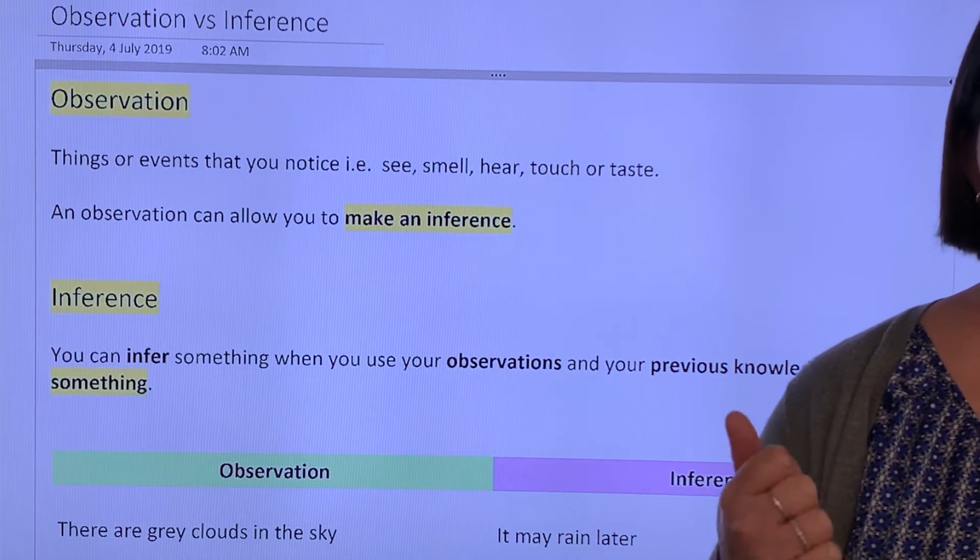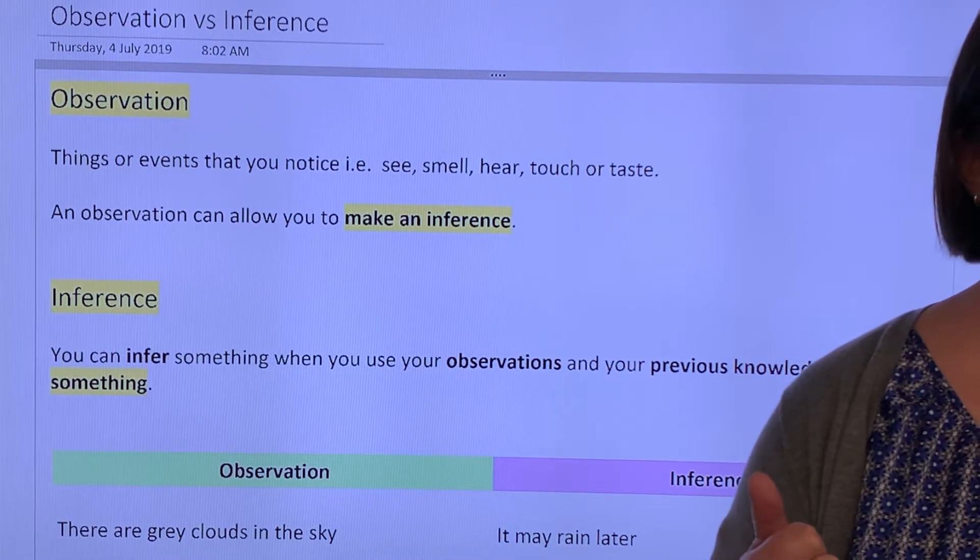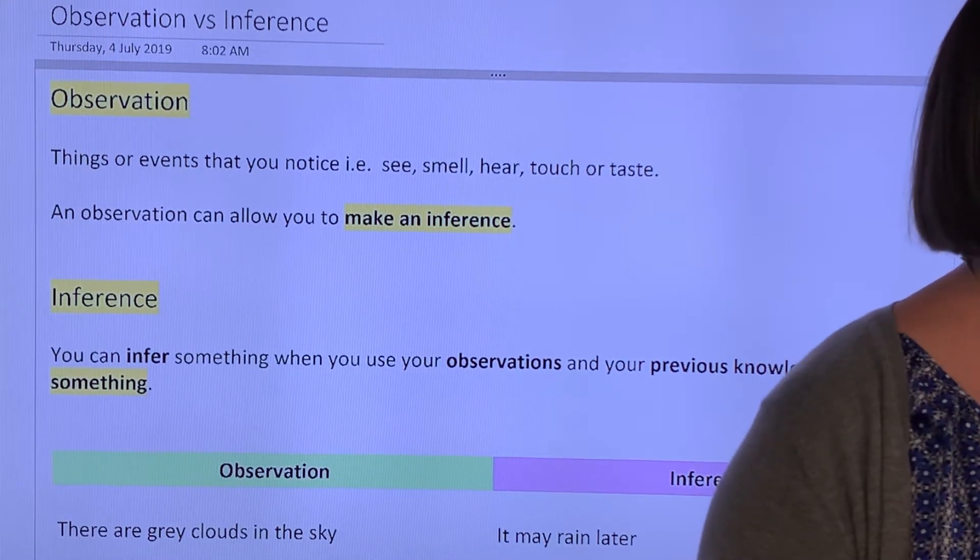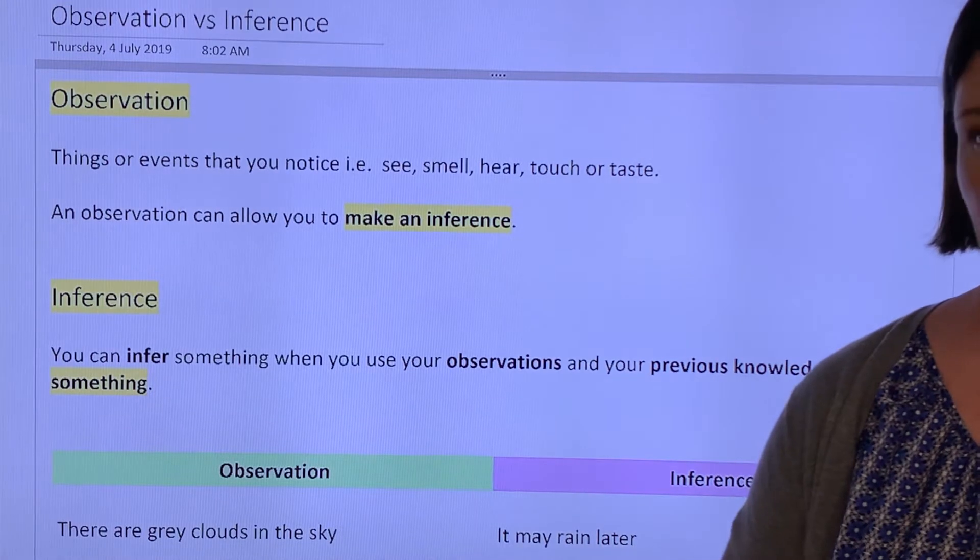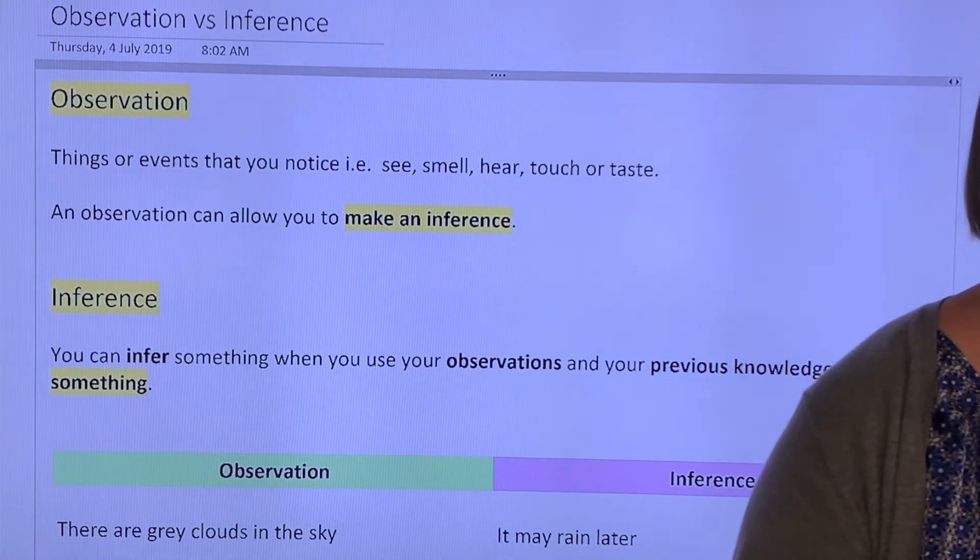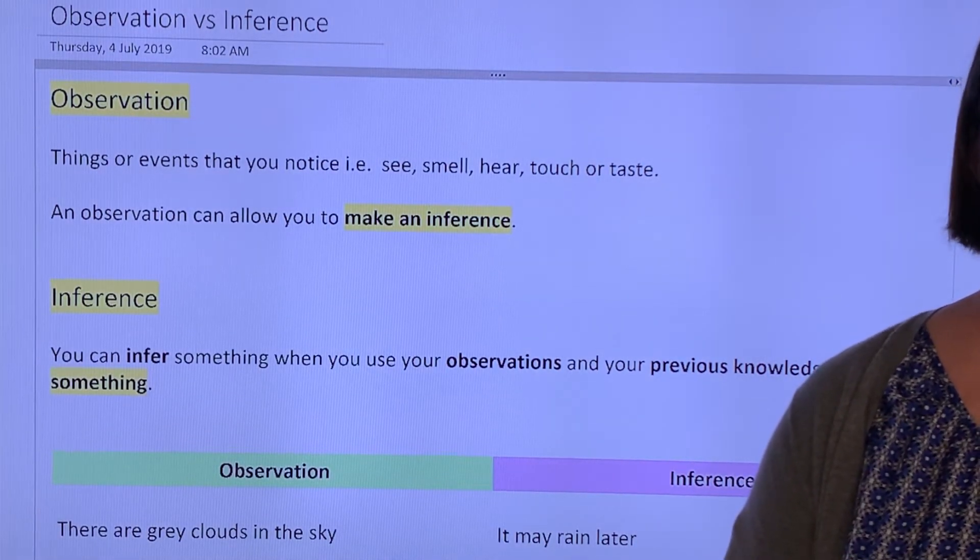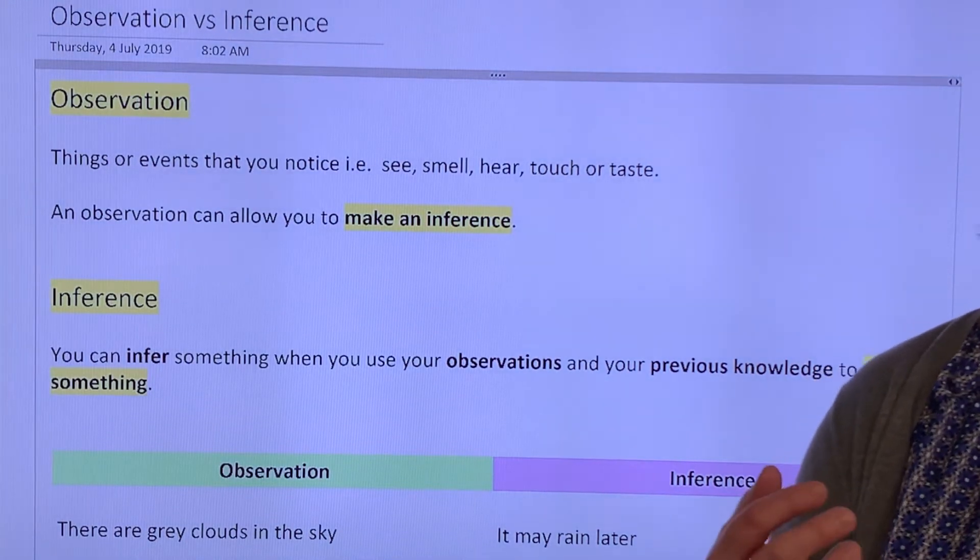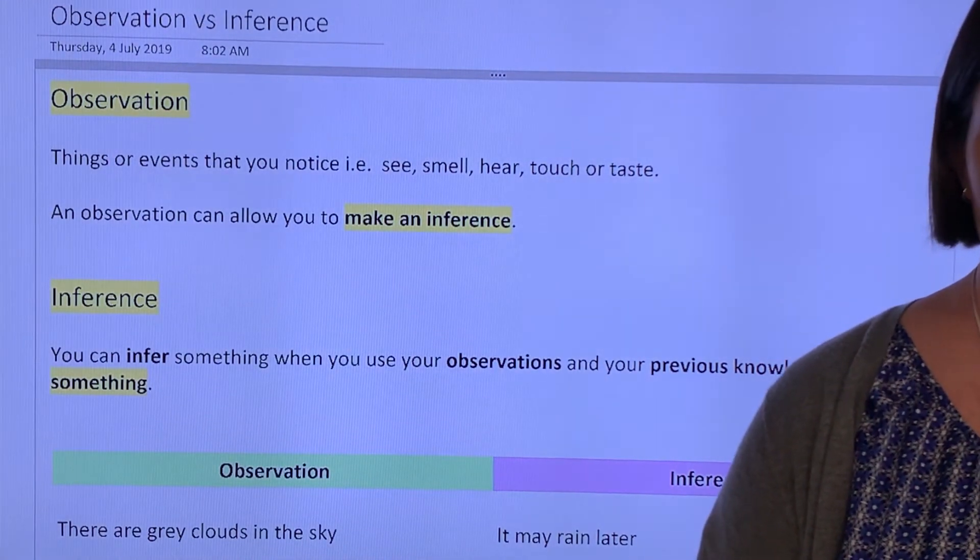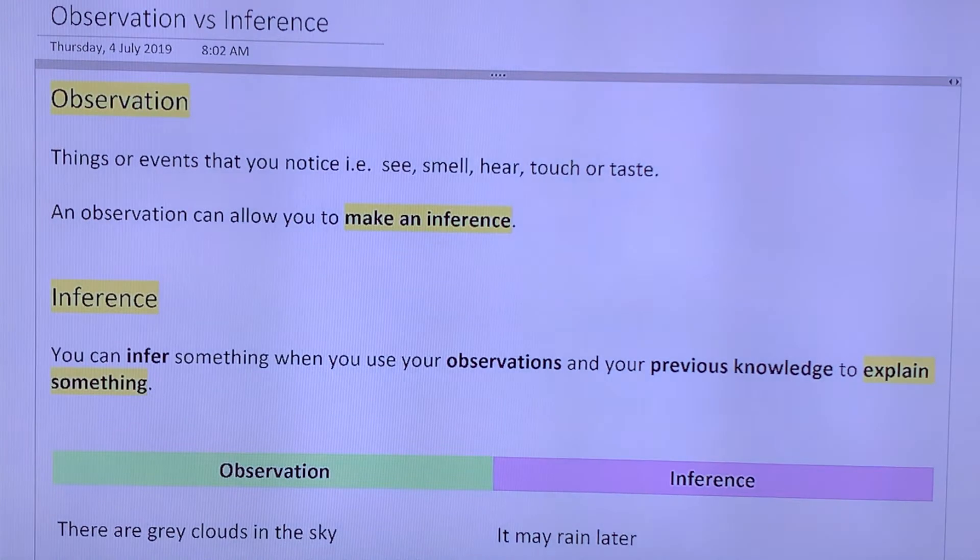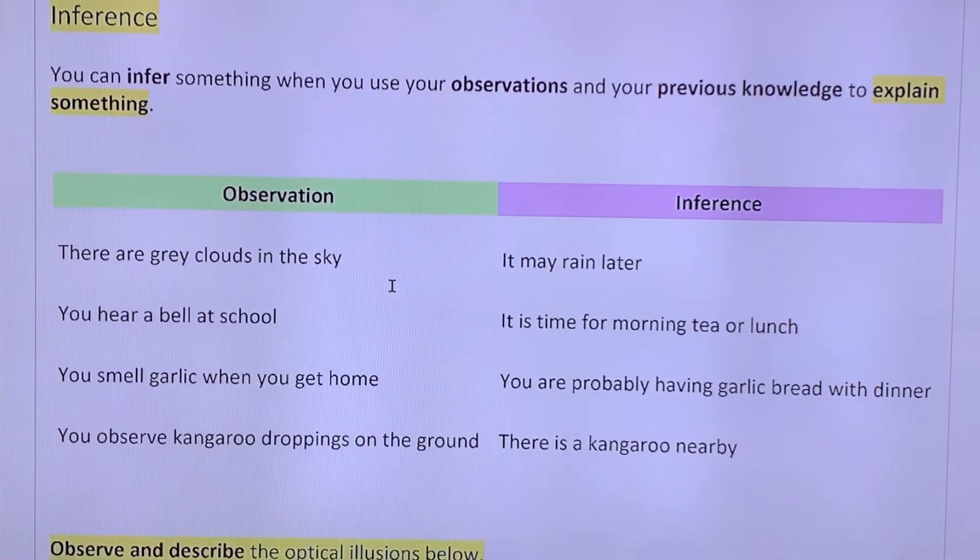The difference between guessing and inferring. What do you think the difference is between making a guess and making an inference? Because there is a difference. Perfect. An inference is based on information. It's based on information. So I could say, I can smell burning. There's a fire near here. I could infer that it was this area of bush. I could make an inference. Now, in terms of inferring, it's always based on something you can observe. And it's also based on previous knowledge. So you are explaining something.